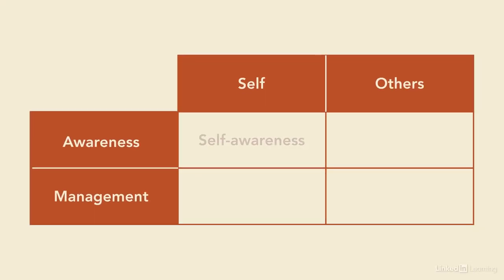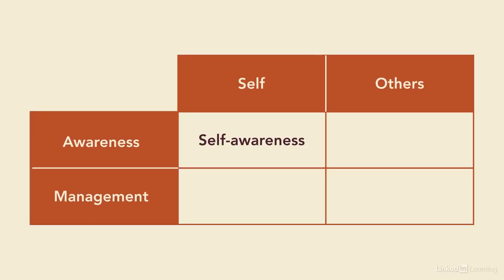Emotional intelligence has four main components that can be plotted on a matrix. The first area is self-awareness, which focuses on how well you know yourself — including your values, strengths, and weaknesses — in comparison to how others perceive you.